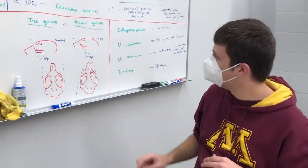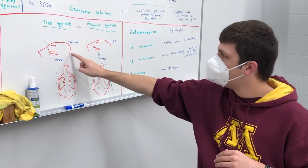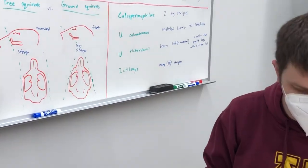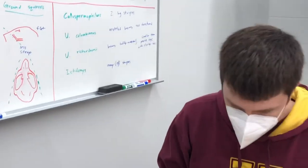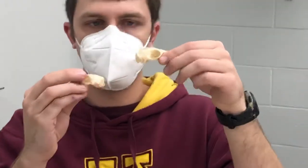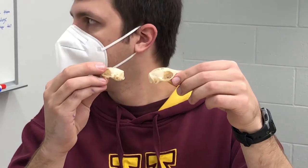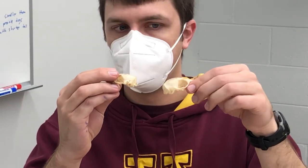So the first thing: tree squirrels have a bit of a more rounded skull in the back versus a flatter skull for a ground squirrel. If I hold up a tree squirrel in my left hand and a ground squirrel in my right hand, you can see the back of the skull is a little rounder than the other. But that's a little subjective — we have other things we can look at.